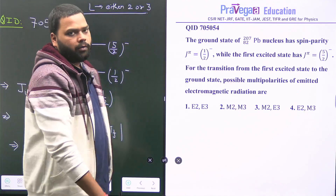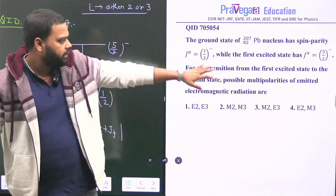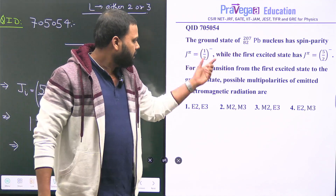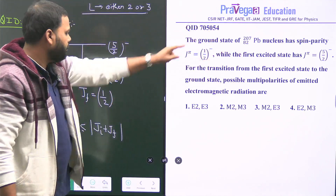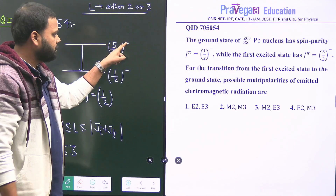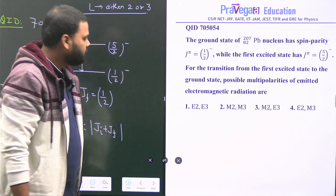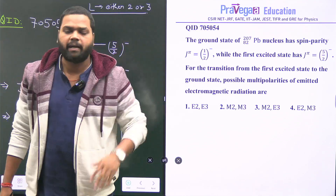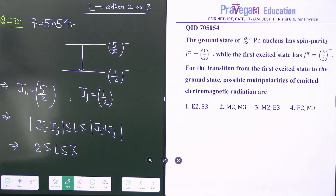Now let's talk about parity. The first excited state has spin parity 5/2 minus and the ground state is 1/2 minus. Both have negative parity, which means there is no change in parity in this transition.